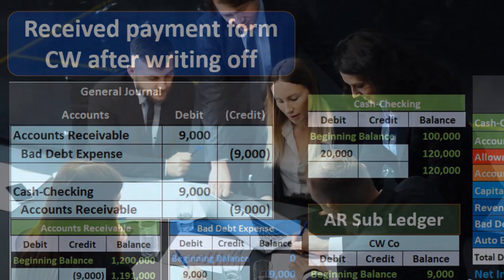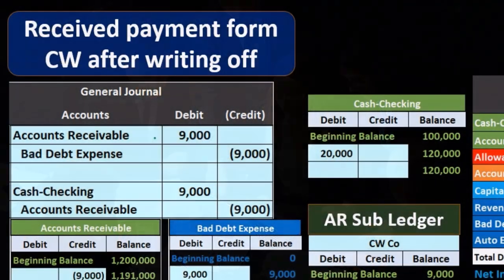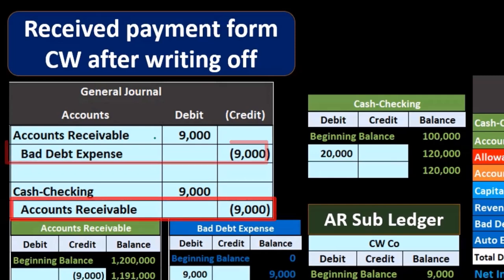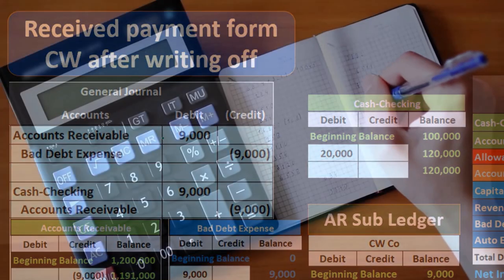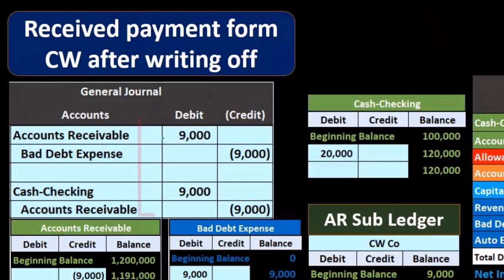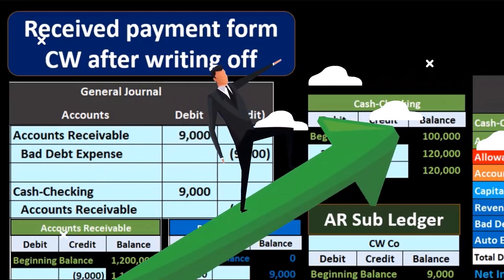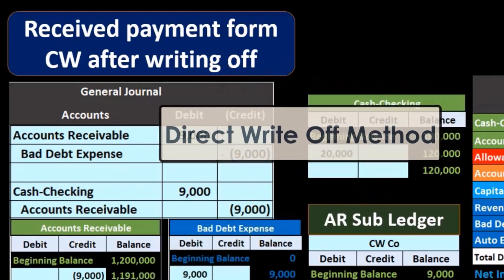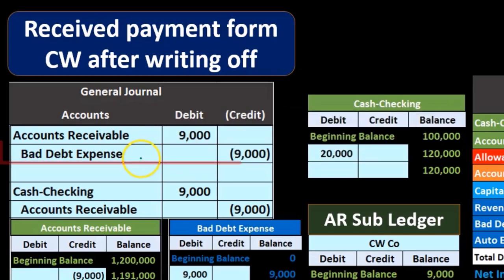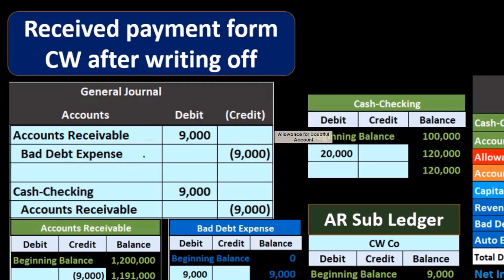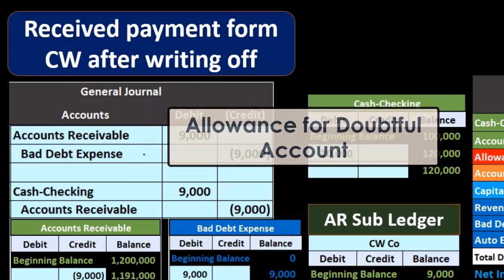We're going to reverse what we did last time. Under the direct write-off method, we credited accounts receivable and debited bad debt, so we're going to reverse that — putting them back on the books by increasing accounts receivable by $9,000 and decreasing bad debt. It's unusual that bad debt expense is going down since it typically only goes up with debits, but this is an exception when reversing under the direct write-off method. Under the allowance method, this would instead be the allowance for doubtful accounts.